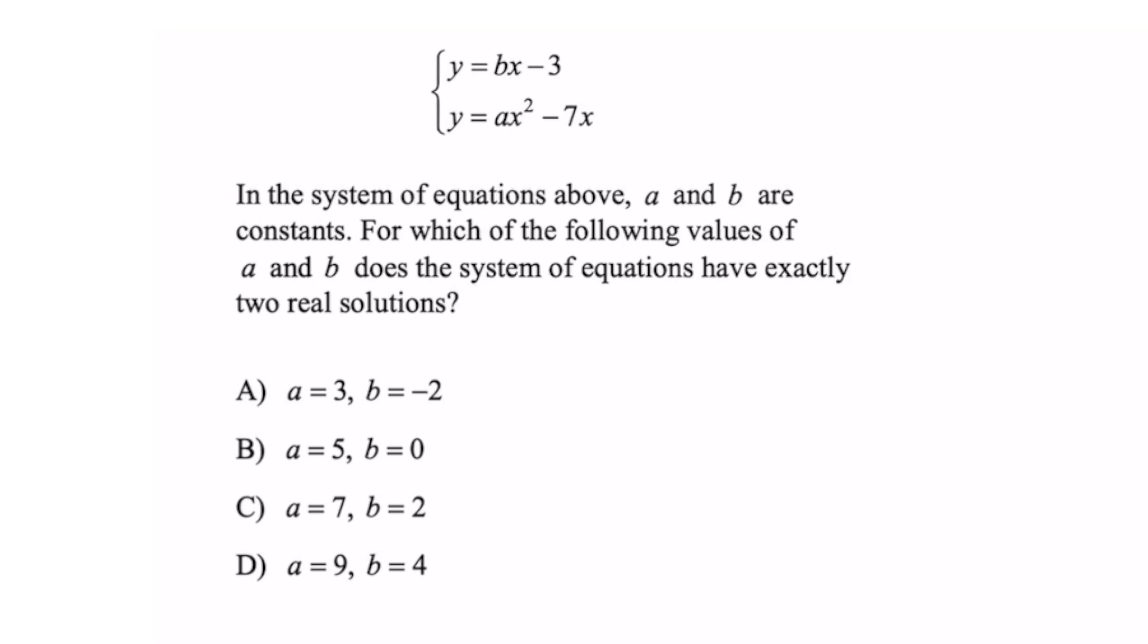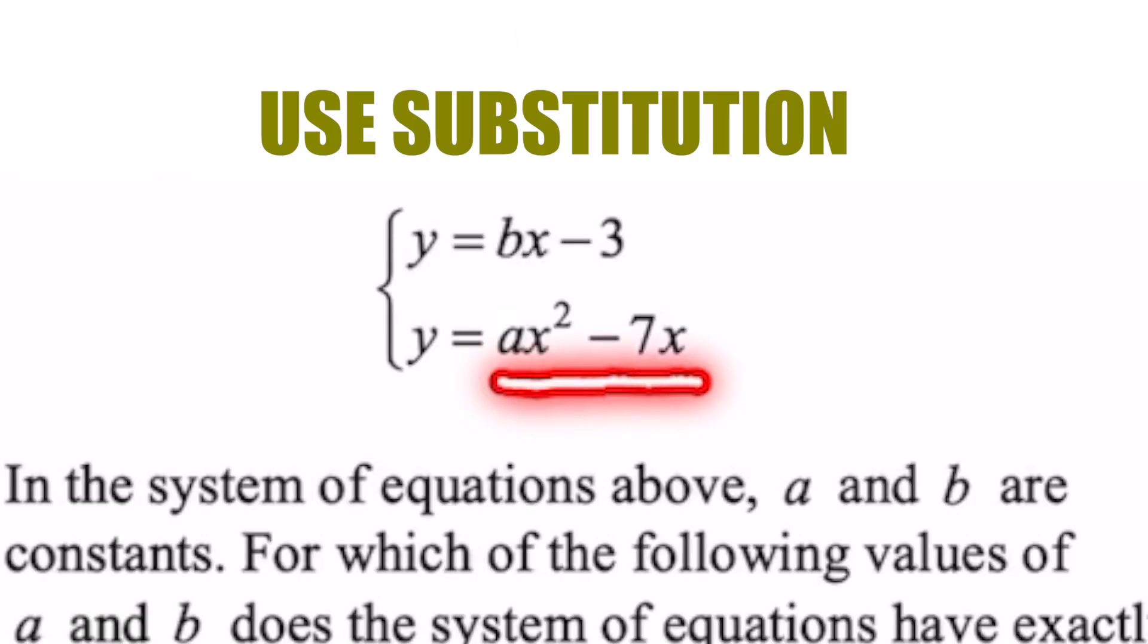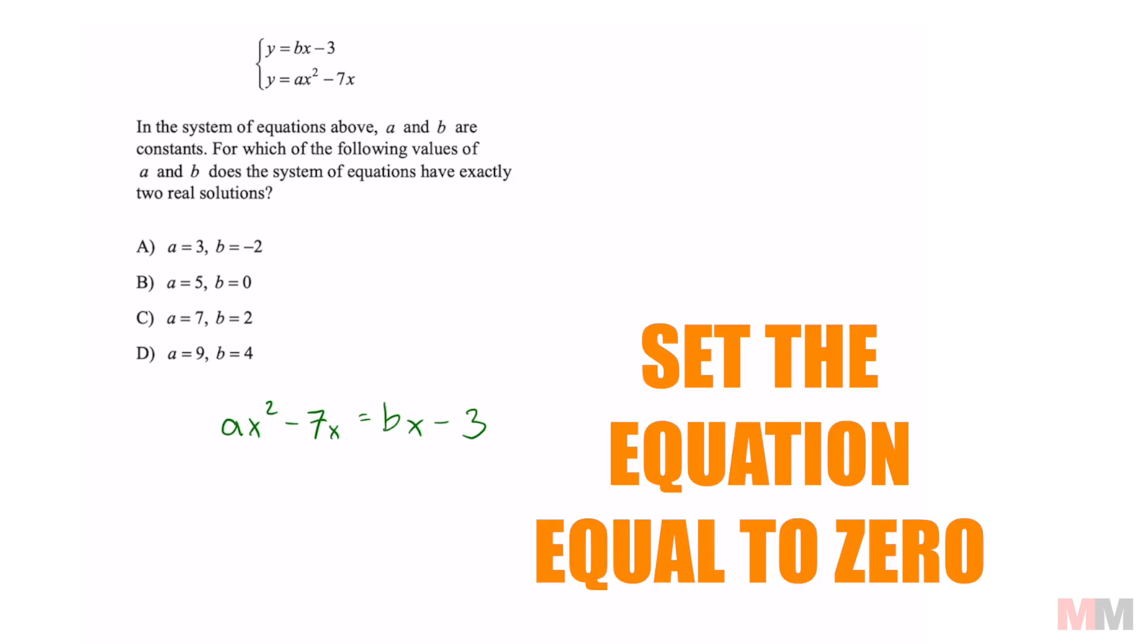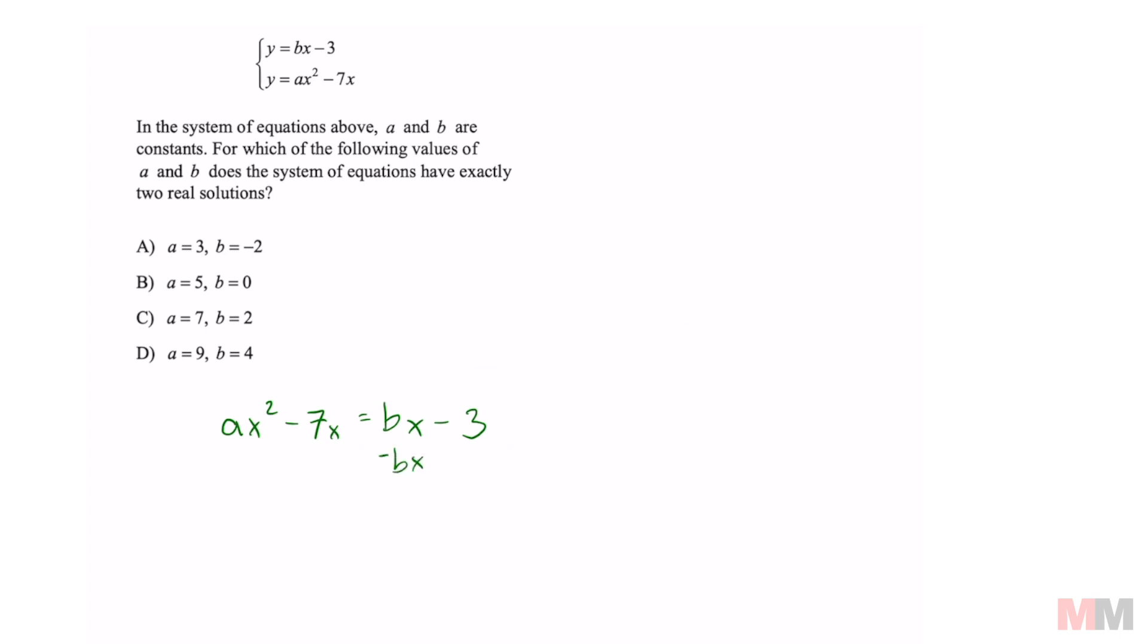First, we got to combine all of this information somehow, and we're going to substitute this expression in for y into the other equation. So that's going to look like ax squared minus 7x equals bx minus 3. In order for us to use that discriminant formula, you're going to have to equal this to 0. So we got to get rid of those terms. Subtract bx and add a 3.